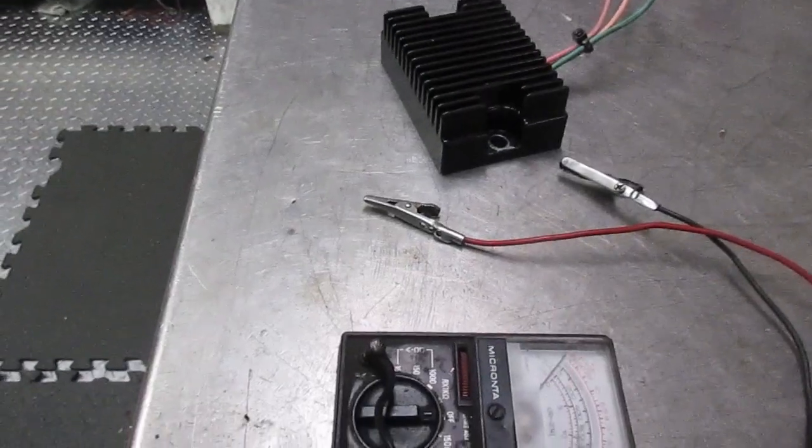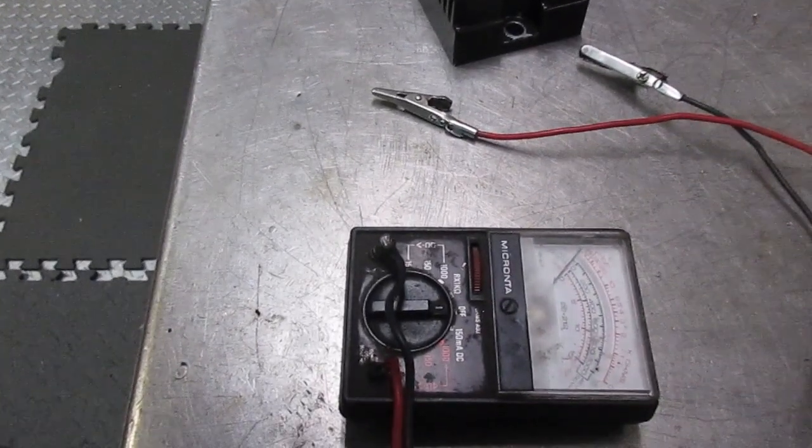So there you go guys, that's how you check your generator to see if it's charging. I hope that works out for you. If you have any questions, give Fritz a call at 530-694-2521. That's our shop number. Good luck.